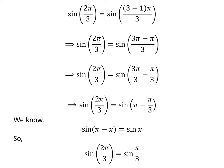Application of the identity gives us sine of 2 times pi upon 3 is equal to sine of pi upon 3.